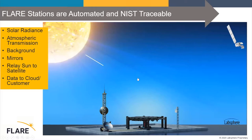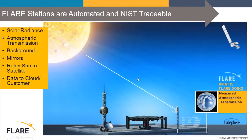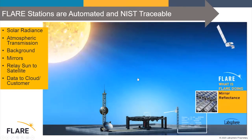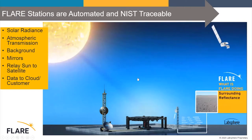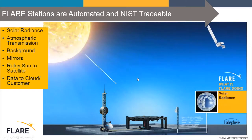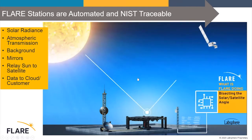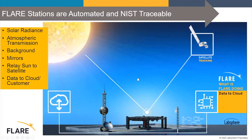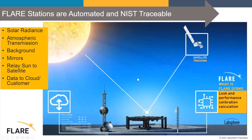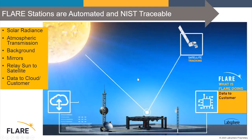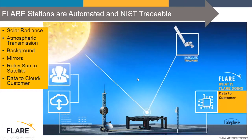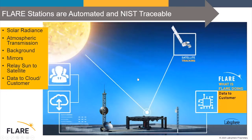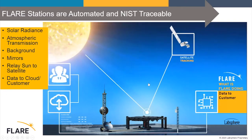We measure the sun, get measured atmospheric transmission and solar radiance, measure the mirror reflectance, measure the surrounding reflectance, and then relay the sun to the satellite using the tracking system. We correlate all that information, send it to the cloud, and the customer can pull it down through the Flare portal. Very simple, very easy to use, very powerful.